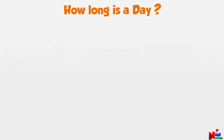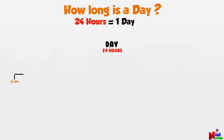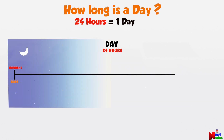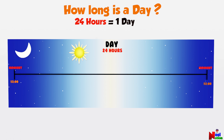Now let's learn about a day. How long is a day? 24 hours make one day. In other words, a day is 24 hours long — a 24-hour period starting from one midnight to the next.